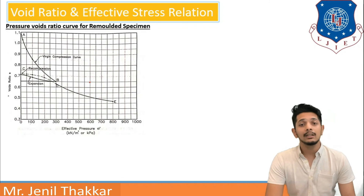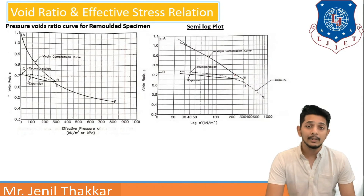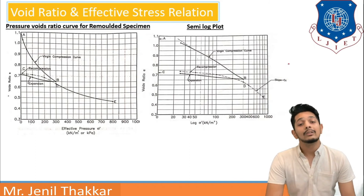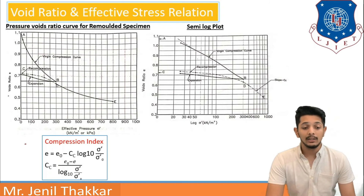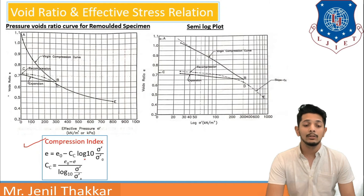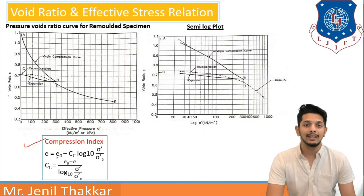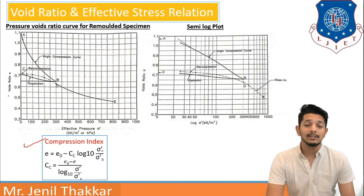If this curve is plotted on a semi-logarithmic graph, lines AB and CB become straight. From these straight lines and their slopes, Terzaghi has given empirical formulas. For the compression index, Terzaghi's formula is: e = e₀ − Cc × log₁₀(σ′ / σ₀′), where e is the void ratio, e₀ is the initial void ratio, Cc is the compression index, σ′ is the final effective pressure, and σ₀′ is the initial effective pressure. From this, Cc can be written as: Cc = (e₀ − e) / log₁₀(σ′ / σ₀′). The compression index Cc is obtained from the slope of straight line AB in this figure.